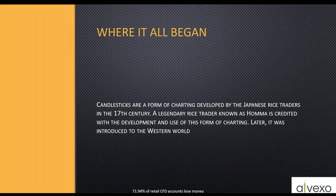We have candlestick patterns like dojis, haramis, engulfing, three black soldiers, three white crows - all of these convoluted patterns. Years ago, when trading was a much slower-paced world and we didn't have online trading, assets moved slower and we were hand-charting. We had time to look for these patterns. Today the market moves so fast that looking for all these patterns - or simple ones like bearish or bullish engulfing, or doji - doesn't really tell you anything by itself.